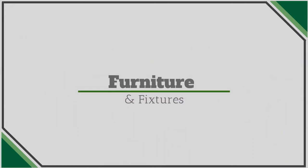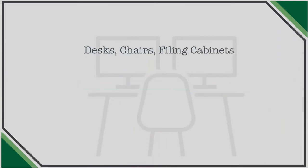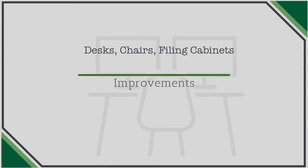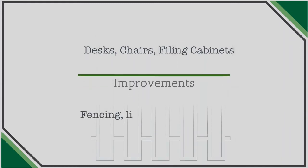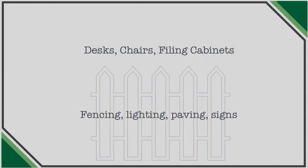The next asset category is furniture and fixtures. This includes things like desks, chairs, and filing cabinets — the peripheral items in an office building that you may use for multiple years. Finally, land improvements are items attached to the land but not part of the land itself, such as fencing, lighting, paving, and signs added to the property.